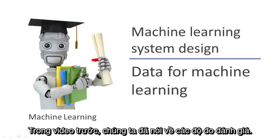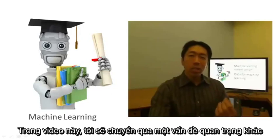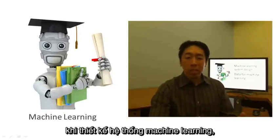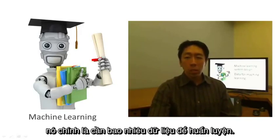In the previous video, we talked about evaluation metrics. In this video, I'd like to switch tracks a bit and touch on another important aspect of machine learning system design, which will often come up, which is the issue of how much data to train on.